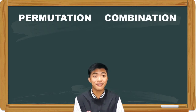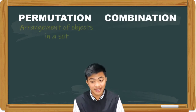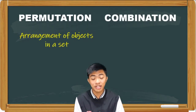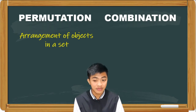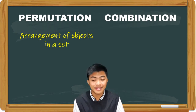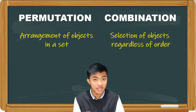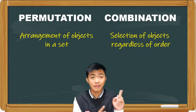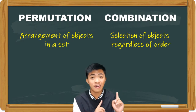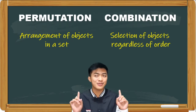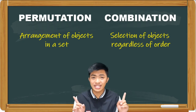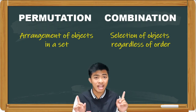Permutation, as defined by the textbooks, is the arrangement of objects in a set. So remember the keyword, guys — it's arrangement. Combination, on the other hand, is the selection of objects regardless of order. So for combination, arrangement doesn't matter. Those two definitions are actually enough for us to differentiate the two.